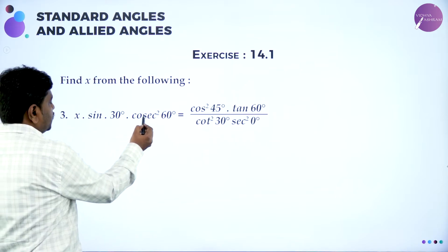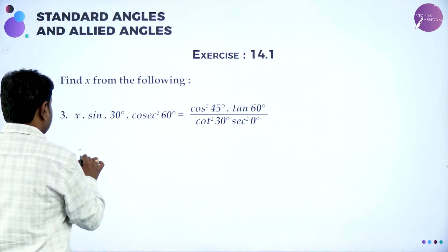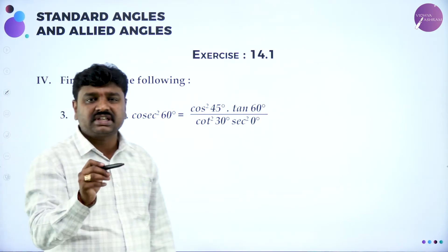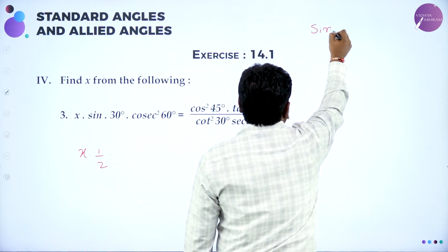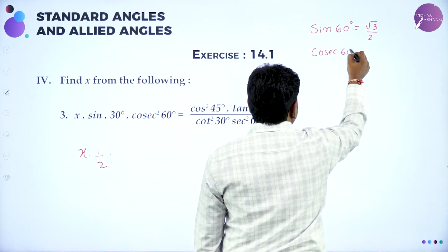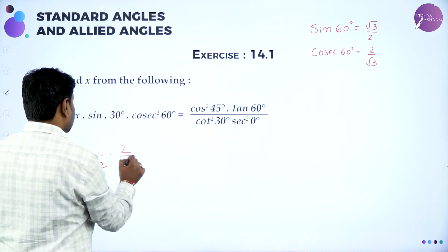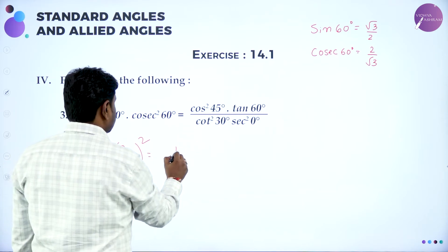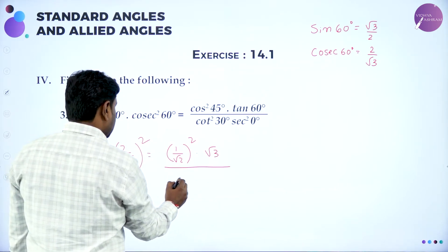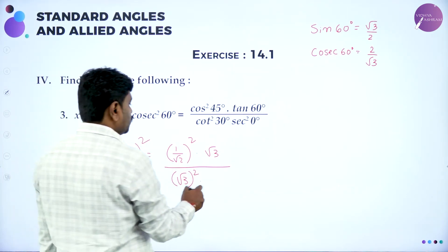Next problem: x · sin 30 · cosec² 60 = cos² 45 · tan 60 divided by cot² 30 · sec² 0. Now: sin 30 = 1/2. Cosec² 60: sin 60 = √3/2, so cosec 60 = 2/√3, giving cosec² 60 = (2/√3)². Cos² 45 = (1/√2)². Tan 60 = √3. Cot 30 = √3, so cot² 30 = (√3)². Sec 0: cos 0 = 1, so sec 0 = 1, giving sec² 0 = 1.